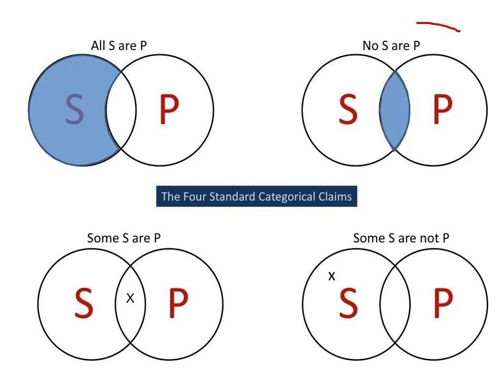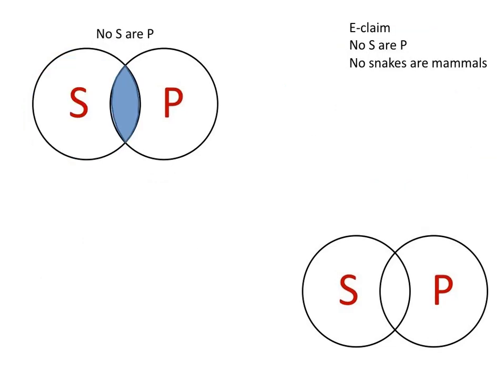In this video, I'm going to show you how to diagram the E claim, the No S are P claim. The correct diagram for the E claim, the No S are P claim, looks like this, but we need to figure out how to get there.